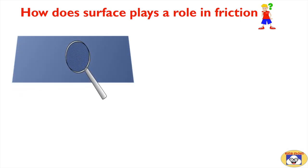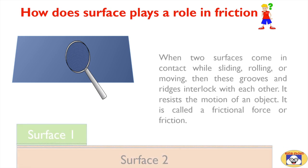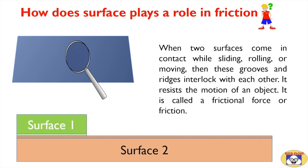If you see any surface which seems to be smooth, even under a magnifying glass, you will see irregularities present on the surface. When two such surfaces come in contact while sliding, rolling, or moving, these grooves and ridges interlock with each other and resist the motion of an object. This is called a frictional force, or friction.